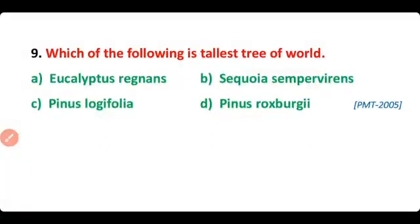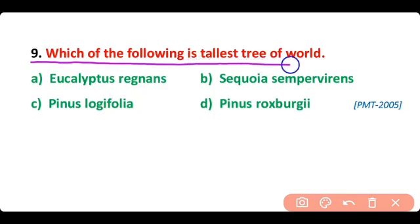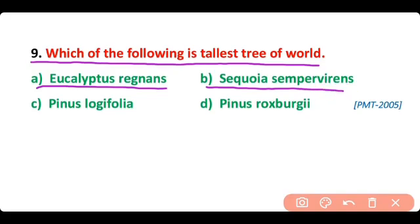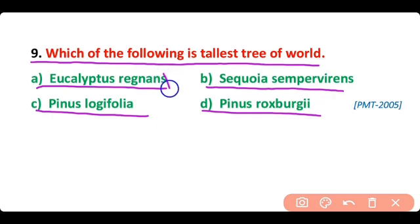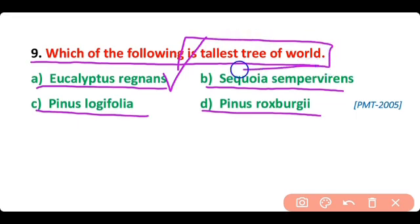Question 9. Which of the following is the tallest tree in the world: Eucalyptus regnans, Sequoia sempervirens, Pinus longifolia, or Pinus roxburghii? The correct answer is option A. Eucalyptus regnans is the tallest tree in the world.